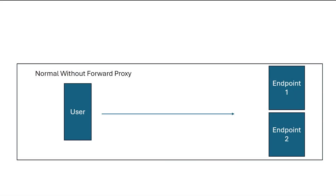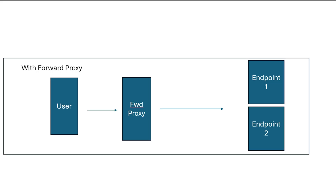The first approach is going to be a forward proxy. A forward proxy is going to sit — let me architecturally show this for you — between the user and the endpoint. So let's say we're in a normal environment without a forward proxy. The user would connect directly to cloud provider A, cloud provider B, SaaS provider A, or SaaS provider B, and it's directly connected — but we have no way to control it.